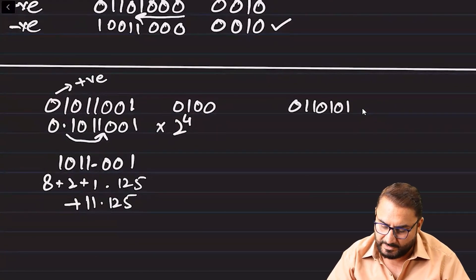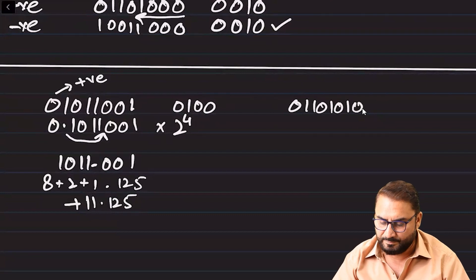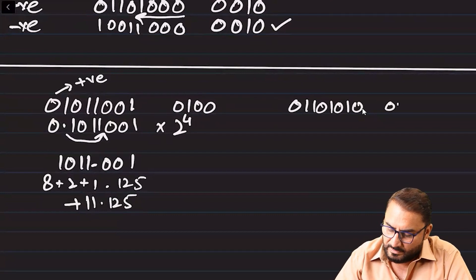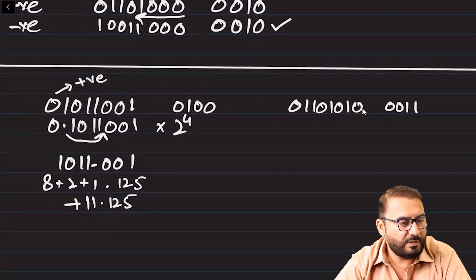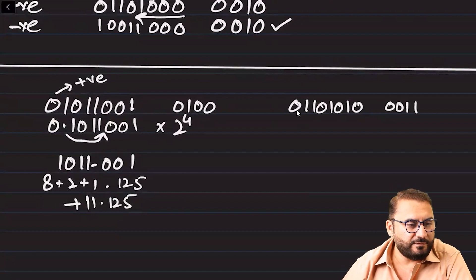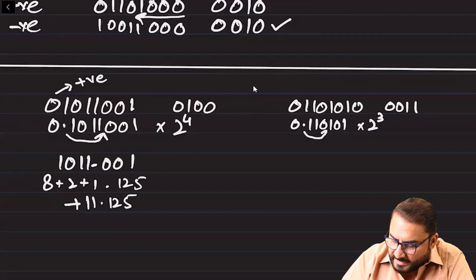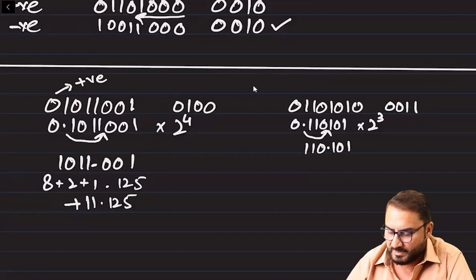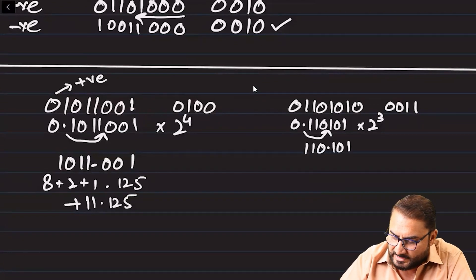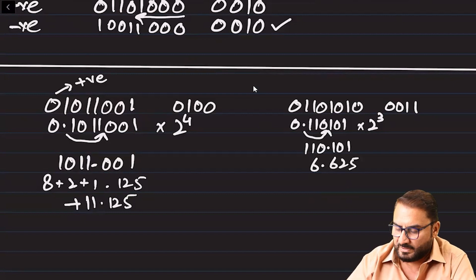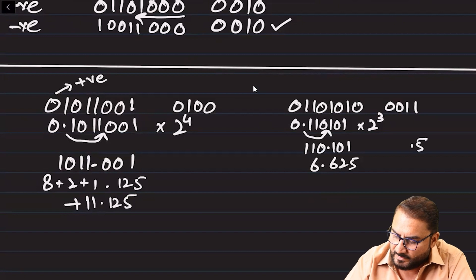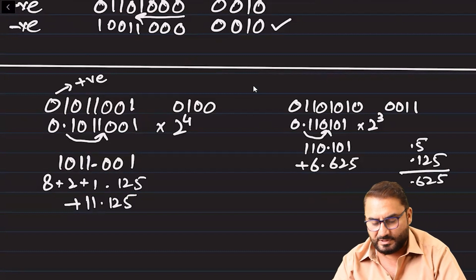Let's solve another number: 0110 1011 — one two three four five six seven eight — and the exponent is 0011. Since the number is positive, we start solving it: two to the power three, so the point moves right three times, giving us 110.101. This is one, two, four — so six — plus 0.5 and 0.125, which is 6.625. This is a positive number.